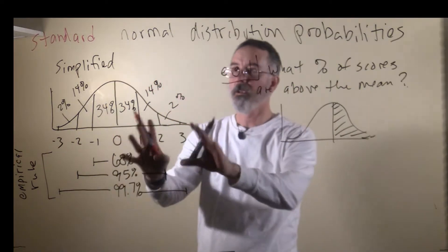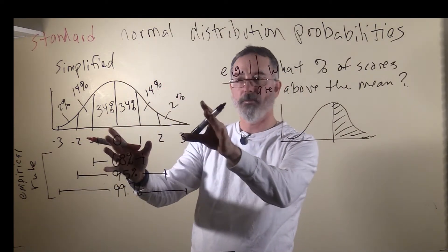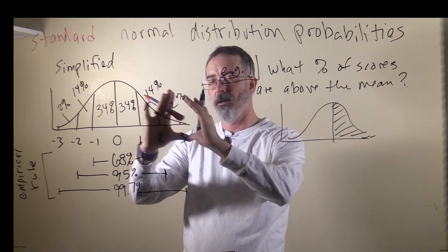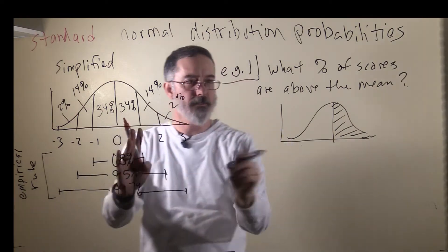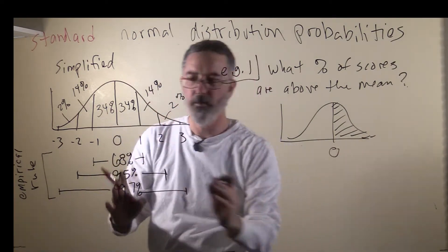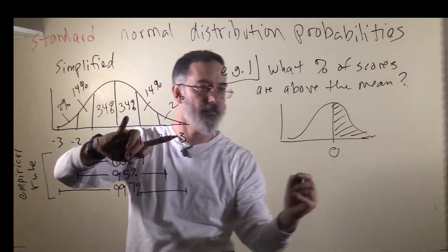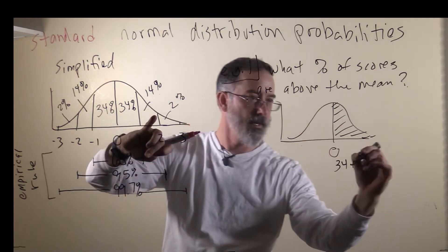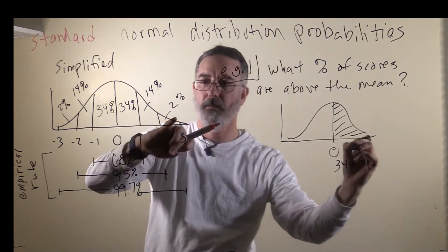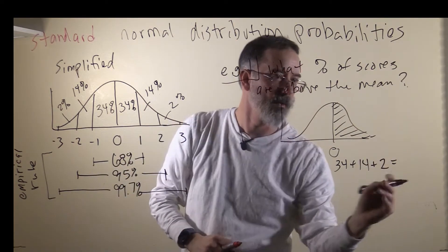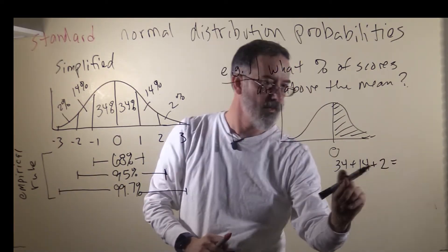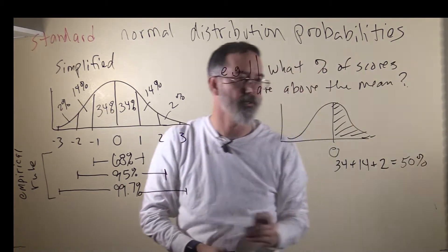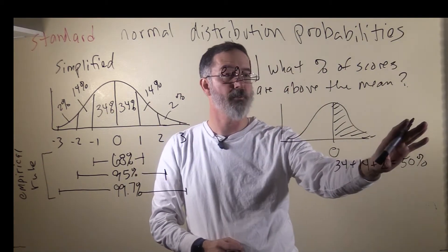To solve this problem, you can go over to your simplified probability distribution. The mean is zero, so we are interested in everything above it. We need to add this 34, and this 14, and this 2 to tell us what percentage of scores are above the mean.